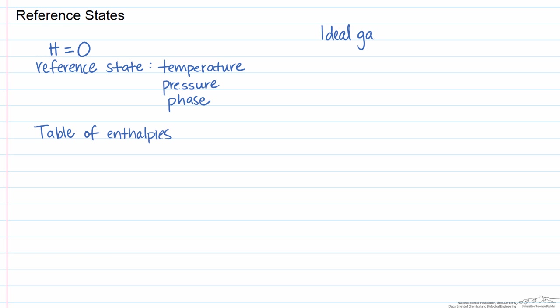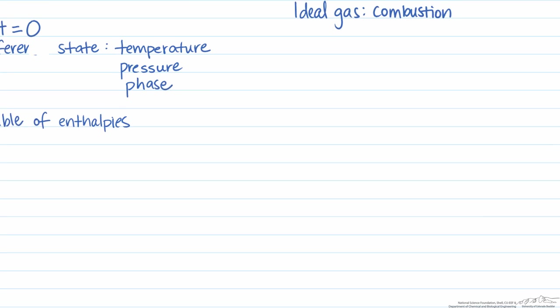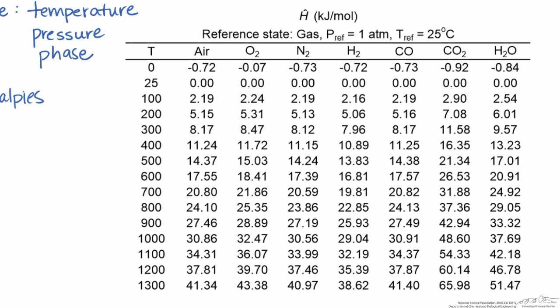Let's say you want to find the enthalpy of an ideal gas, in particular those involved with combustion, at a certain temperature. You can either use heat capacities to calculate it, or you can use a table that has all the enthalpies for you. So here's an enthalpy table for the ideal gases. And if you take a look here, we have a temperature that's 25 degrees C, we have a reference pressure of one atmosphere, and notice that these are gases.